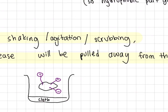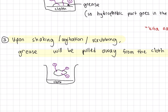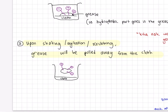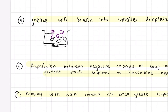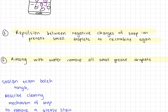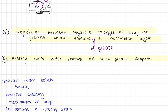After that, you have to shake, agitate, or scrub it. Think of it like a washing machine — it has to rotate or spin to remove all the dirt. The grease will be pulled away from the cloth and break into smaller droplets. Repulsion between the negative charges of the soap ions prevents the small droplets of grease from recombining. Then the last step is to rinse with water to remove all the grease droplets.